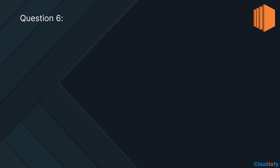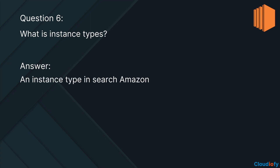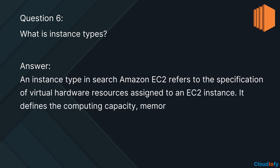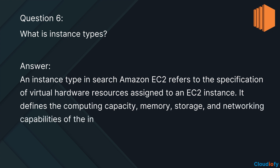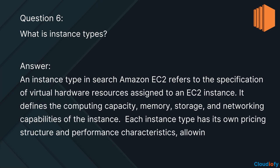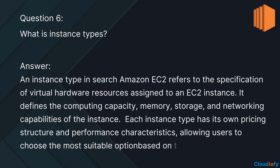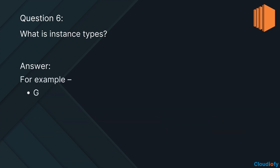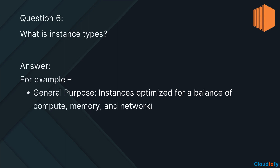The next question is: what are instance types? An instance type in Amazon EC2 refers to the specification of virtual hardware resources assigned to an EC2 instance. It defines the computing capacity, memory, storage, and networking capabilities of the instance. Each instance type has its own pricing structure and performance characteristics, allowing users to choose the most suitable option based on their specific application requirements and budget. For example, general-purpose instances optimized for a balance of compute, memory, and networking resources — example: T3.medium.